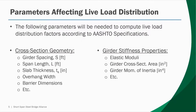When beginning the process of computing live load distribution factors, you'll need a series of parameters, which can be split into two categories. We need parameters related to the geometry of the cross section, such as the girder spacing, the slab thickness, the overhang width, etc. We also need the stiffness properties of the girder: the elastic moduli, the cross-sectional area, the moment of inertia, etc. Once you have a preliminary design, with today's modern spreadsheets and computer programs, these are very easily computed. Just be aware that you'll need a series of data inputs about your given project in order to produce the output live load distribution factors.